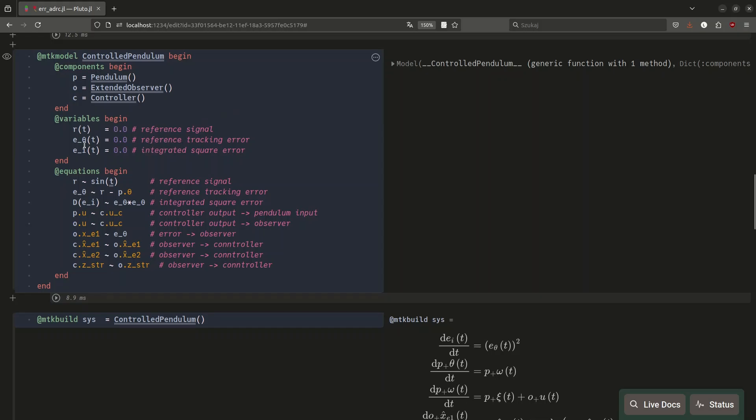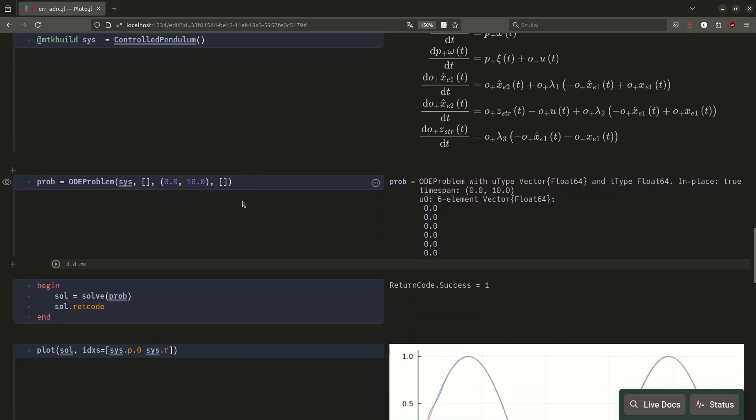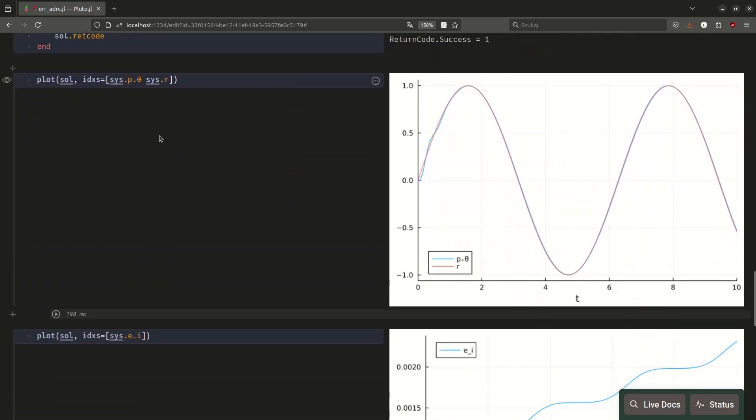We have our reference signal defined, we have the tracking error, which is reference minus the actual angular position, and we have once again the integrated square error. And as you can see, the connections there are pretty straightforward, our reference signal is still sine of t, which means it has the derivatives that are non-zero. And we have the controller output going to the pendulum input and to the observer, and we have error going into the observer, and observer outputs going into the controller. Here's the instantiation of the system, and once again we simulate it from 0 to 10 seconds. And let's see how it works.